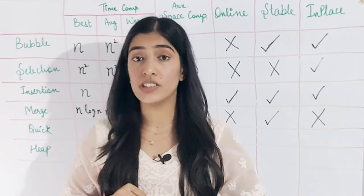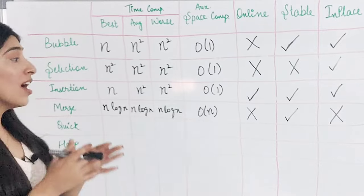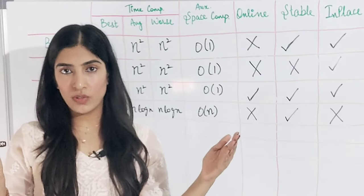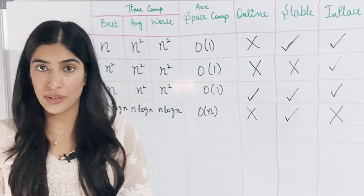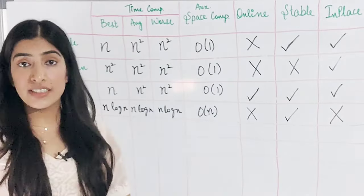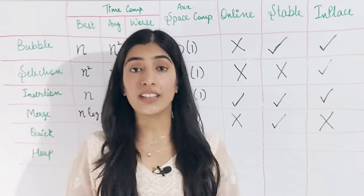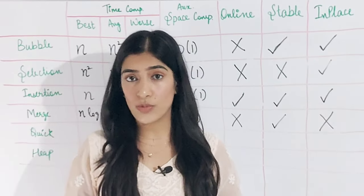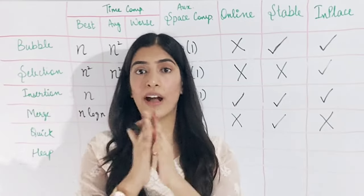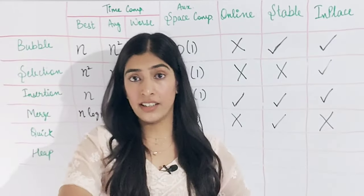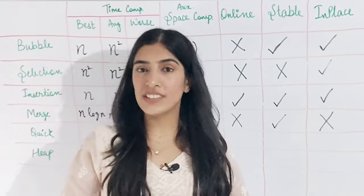There are two interesting points about merge sort. First, it is really preferred for linked lists. For arrays, merging needs extra O(n) space, but for linked lists, when comparing two elements we can just change the next pointer, so we don't need a temporary array — making it space-efficient. Second, merge sort is used for external sorting. If you have a huge chunk of data that cannot be handled at once, you divide it into chunks, sort them separately, and then merge them. This is essentially merge sort applied to, say, large files.